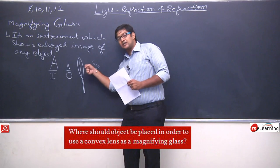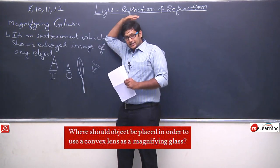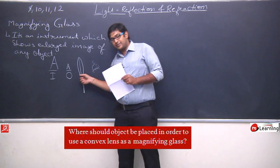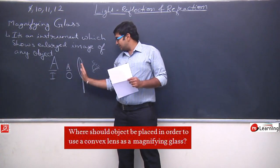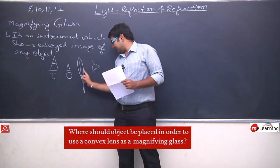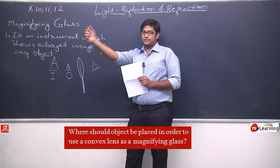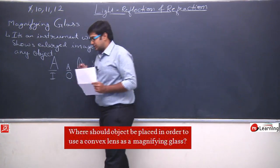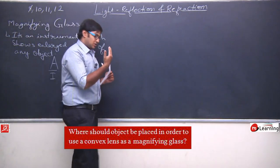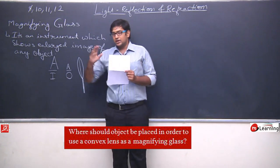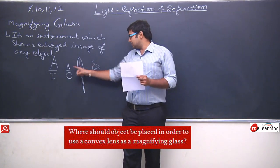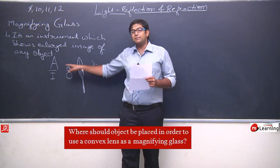Kabhi aisa nahi hota ki aap magnifying glass aisa hold karke letter dekh rahe ho aur aapko image peeche dikhayi de — aisa kabhi nahi hota. Matlab jab bhi hum magnifying glass se kisi object ko dekhte hain, toh object jis taraf hota hai, uski image bhi usi taraf dikhayi deti hai, same direction mein. Yad kijiye, jab hum ne object ko dhire dhire close kiya tha aur ek image bani thi jo object ki same side mein hi thi — yeh case tha jab hum ne object ko focus aur pole ke beech mein rakhha tha.